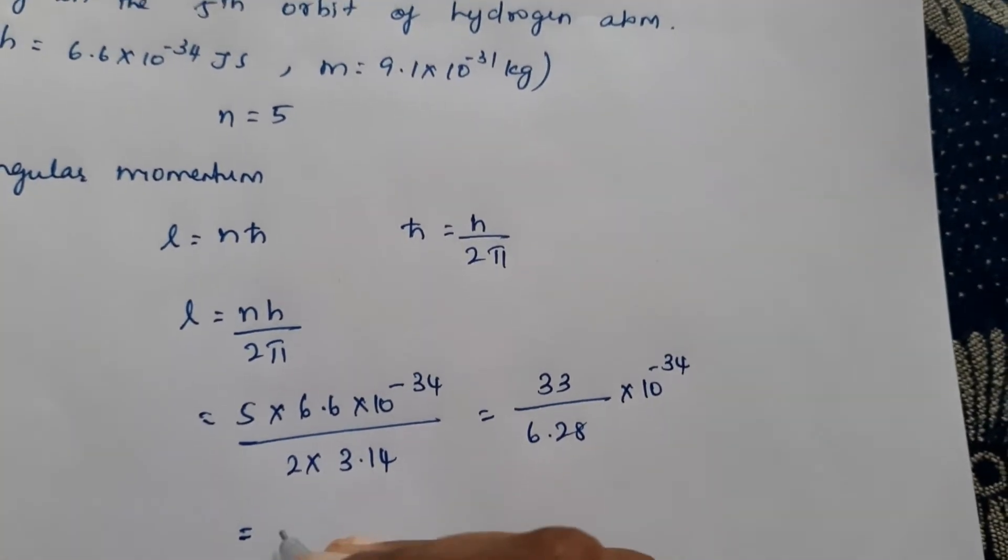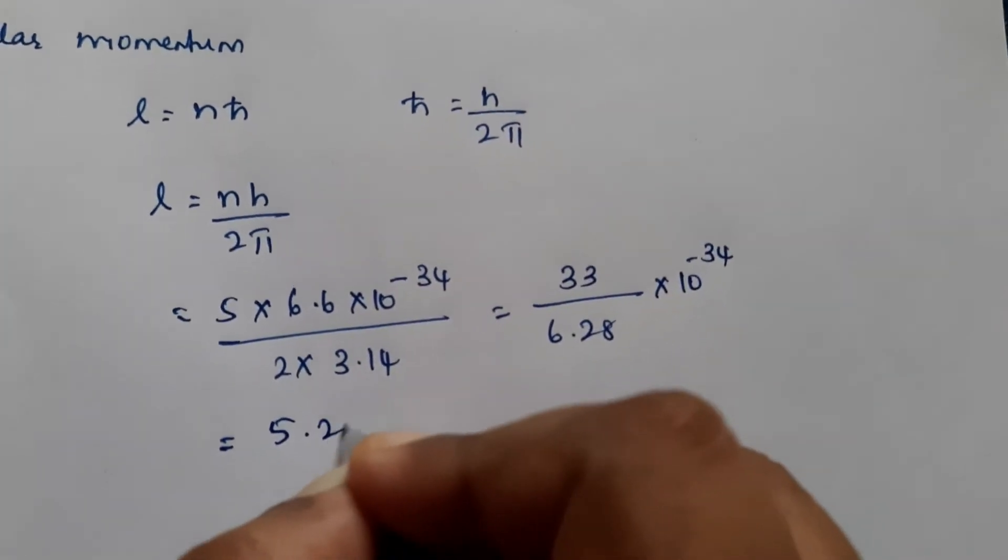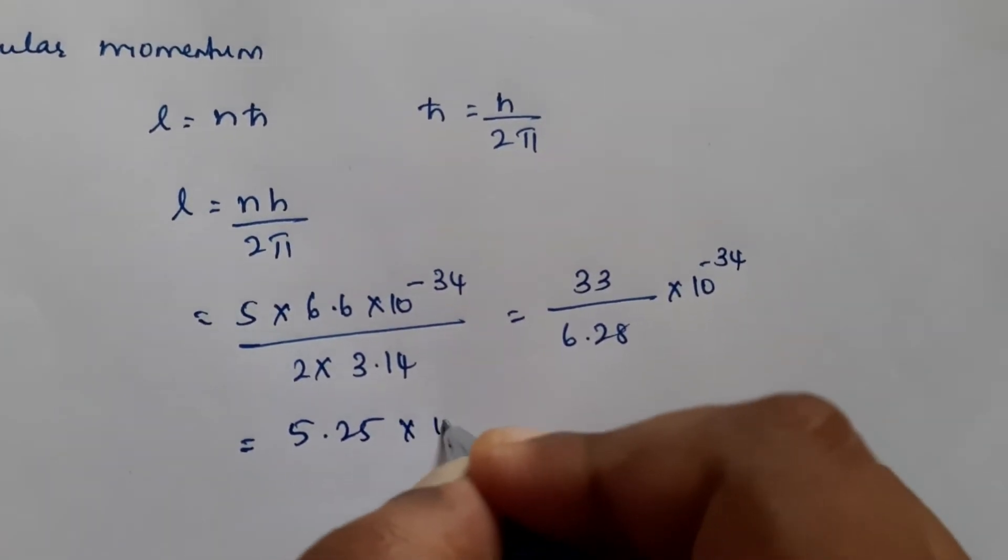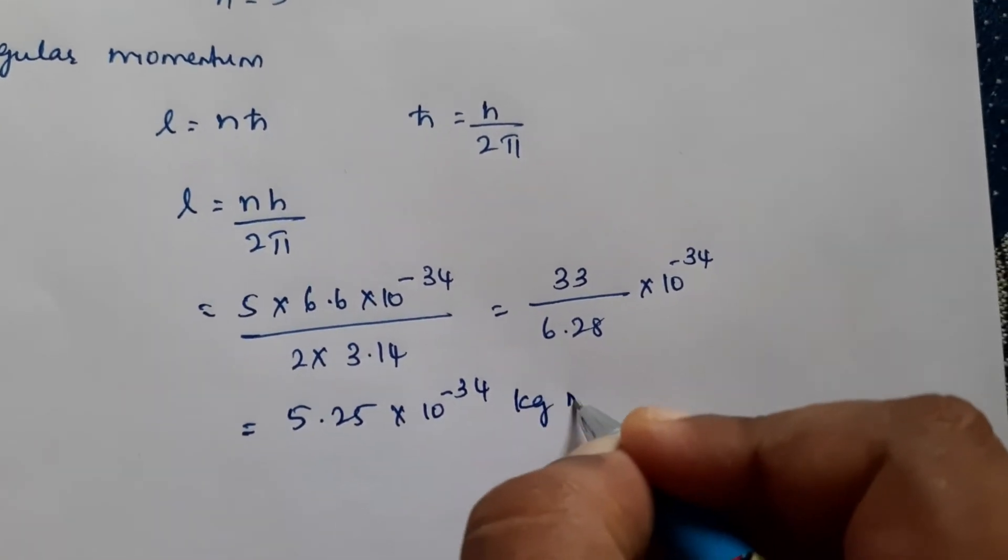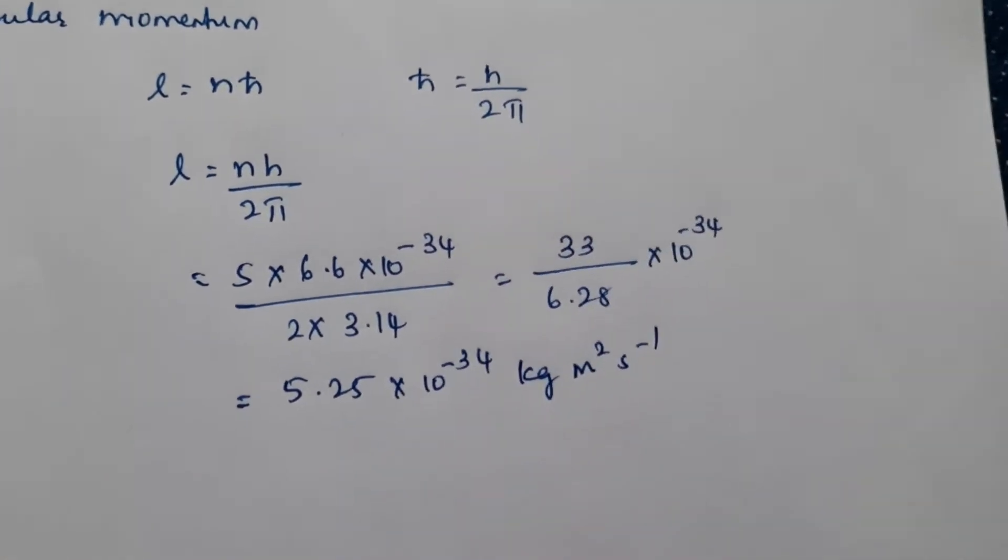Now if you divide this, you will be getting it as 5.25 into 10 raised to minus 34. The unit for angular momentum is kilogram meter square per second.